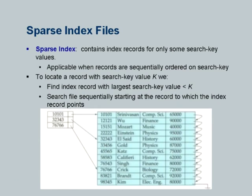In contrast, the sparse index has only a few entries and is applicable only if the file is sorted on the search key. The key idea is that if you store a few representative values, you can search for a record — say 1212121 — and if it is greater than one entry and less than the next, you follow the pointer to that entry and search sequentially until you find the record. As long as you have enough entries, you do not have to search too much of the file. That is the key idea for a sparse index.